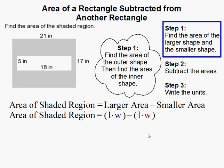Now this is really easy because both shapes are rectangles. So it's just length times width minus length times width.